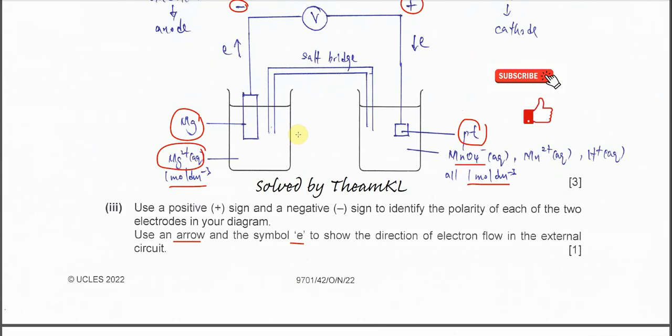However, the potential of the magnesium half-cell does change. When the magnesium ion solution is diluted, the concentration of Mg²⁺ ions decreases, so magnesium tries to replenish these ions — the equilibrium shifts to the left. When equilibrium shifts left, the electrode releases more electrons, and the electrode potential for the magnesium electrode becomes more negative.